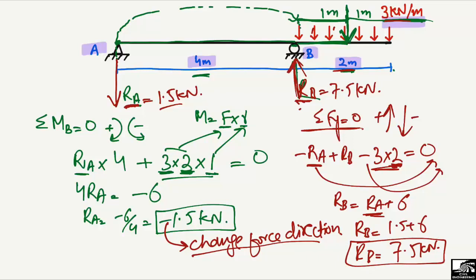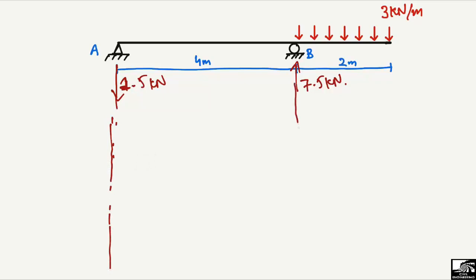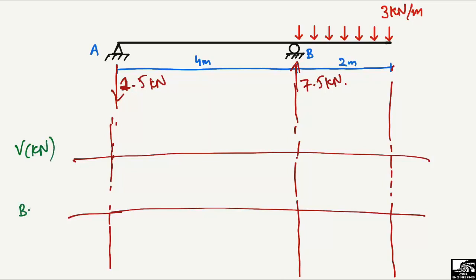Now, to draw the shear force and bending moment diagram for this overhanging beam — RA = 1.5 kN downward and RB = 7.5 kN upward — we first draw reference lines: one for the shear force diagram in kilonewtons and one for the bending moment diagram in kilonewton-meters, both starting at zero.